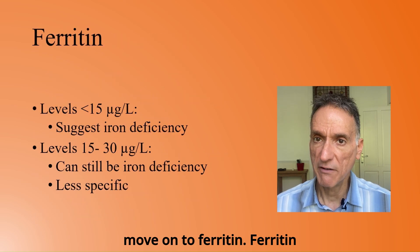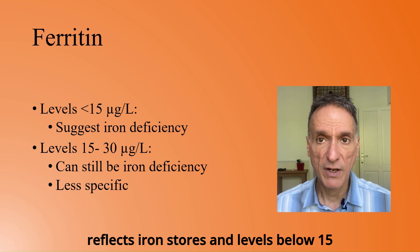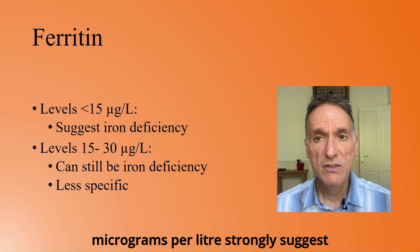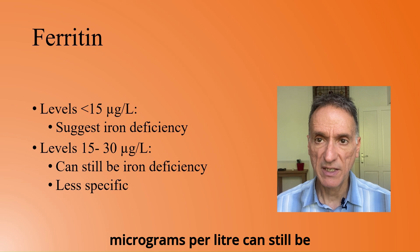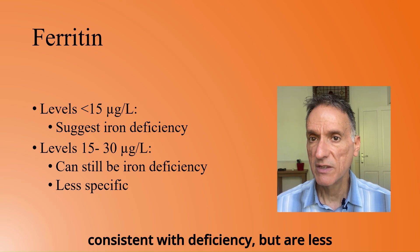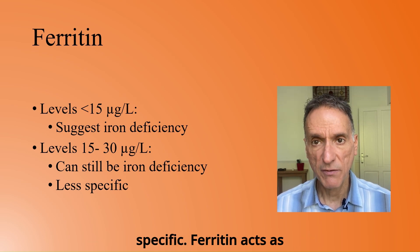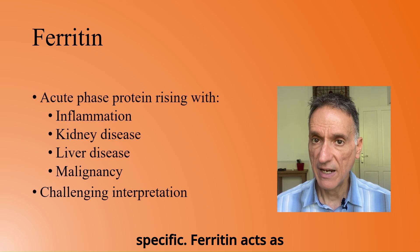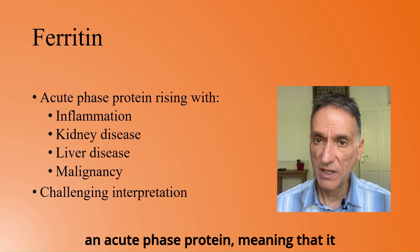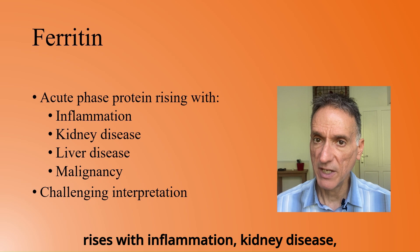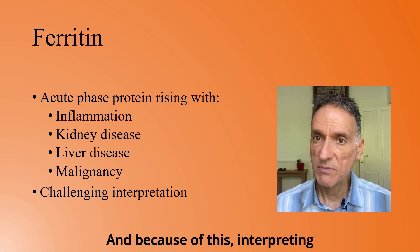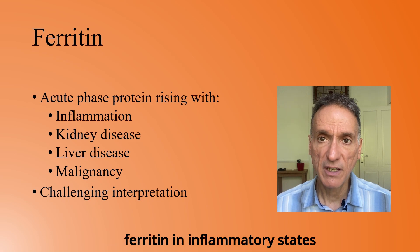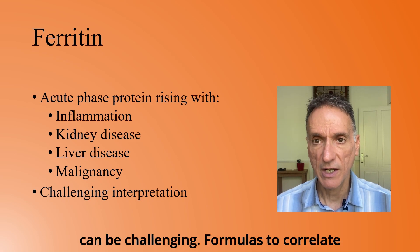Ferritin reflects iron stores and levels below 15 mcg per litre strongly suggest iron deficiency. Levels up to 30 mcg per litre can still be consistent with deficiency, but are less specific. Ferritin acts as an acute phase protein, meaning that it rises with inflammation, kidney disease, liver disease and malignancy, and because of this, interpreting ferritin in inflammatory states can be challenging.